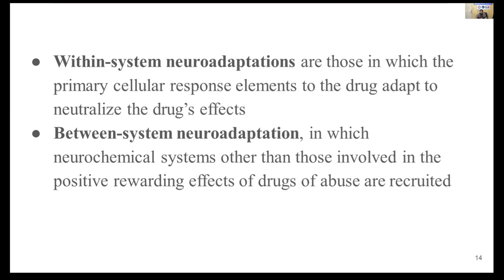Within-system neuroadaptations are those in which the primary cellular response elements to the drug adapt to neutralize the drug's effect. Between-system neuroadaptations involve neurochemical systems other than those involved in the positive rewarding effects being recruited. Initially dopamine is elevated; later, other neurotransmitters such as glutamatergic, GABAergic transmission, dynorphin, and CRF all start to get recruited to counteract the positive rewarding effect of the drug of abuse.